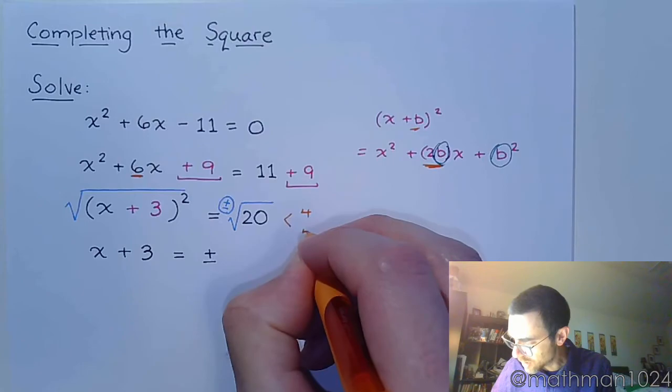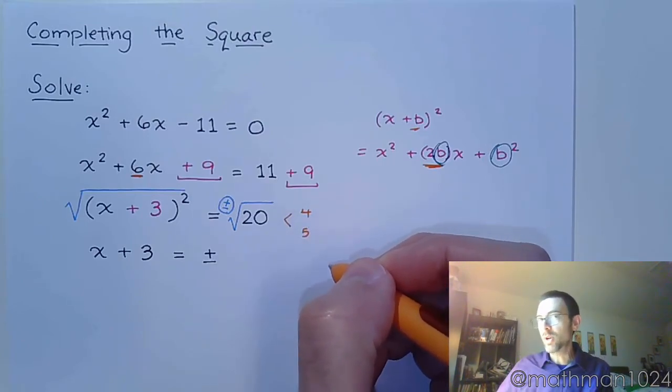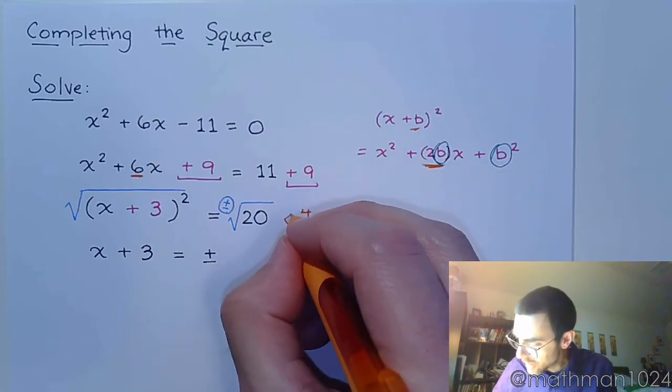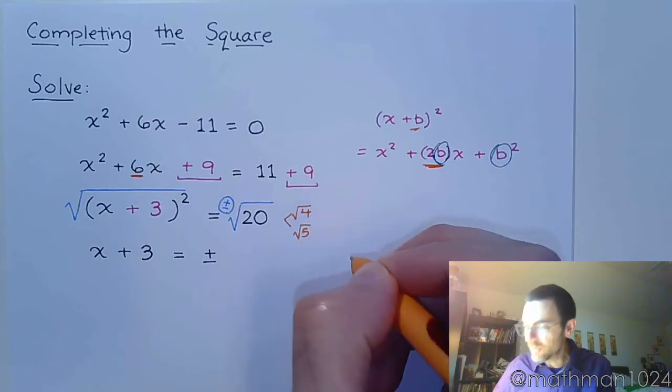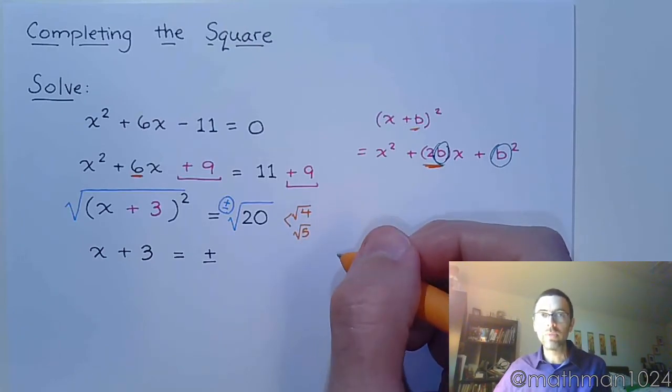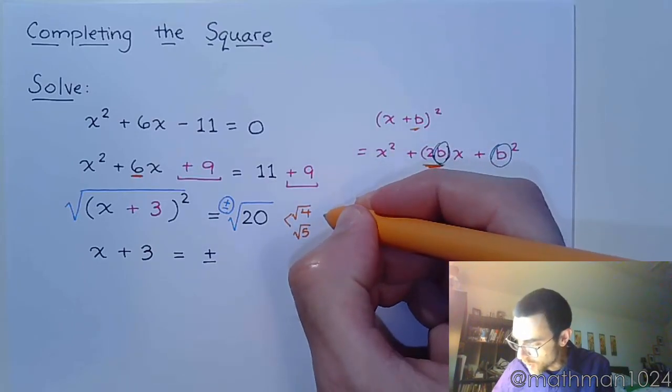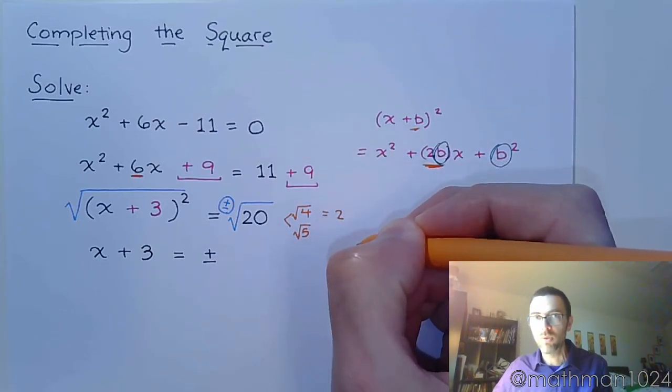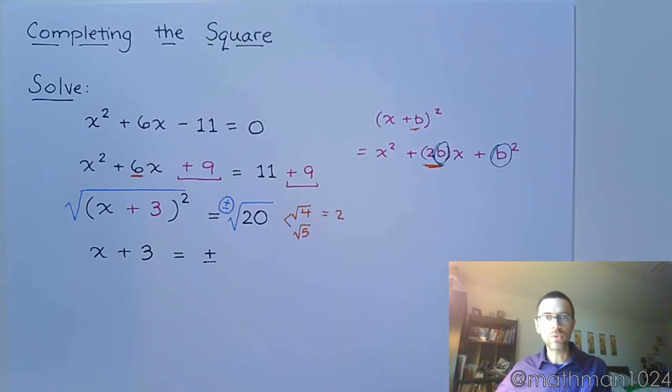So 20 breaks down as 4 times 5, that's really the best way to break it down for simplifying. Again each of these factors is inside of a square root, and to help you out to help you simplify this correctly, you know that the √4 equals 2, right? Not in a square root but it just equals 2. But the √5 stays as it is.